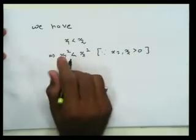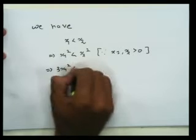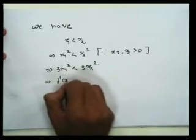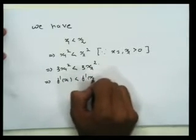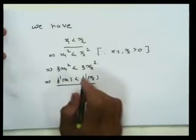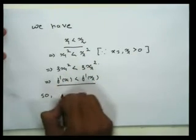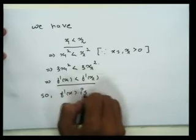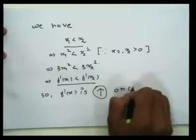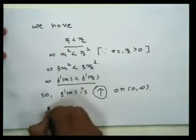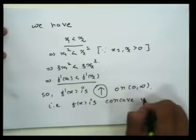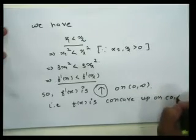So x₁² < x₂² implies 3x₁² < 3x₂². But 3x₁² is f'(x₁) and 3x₂² is f'(x₂). So we started with x₁ < x₂ and reached f'(x₁) < f'(x₂). This proves that f'(x) is an increasing function on (0, ∞), that is, f(x) is concave up on (0, ∞).